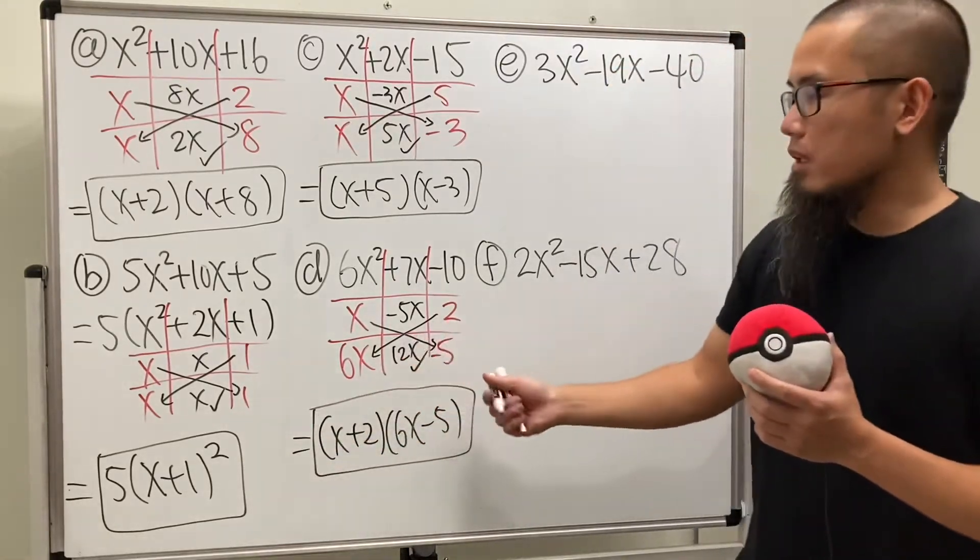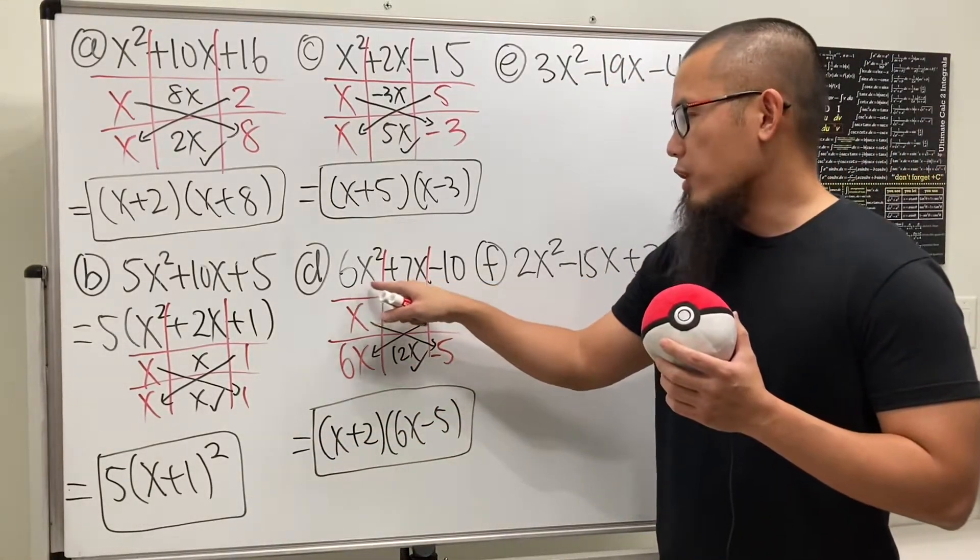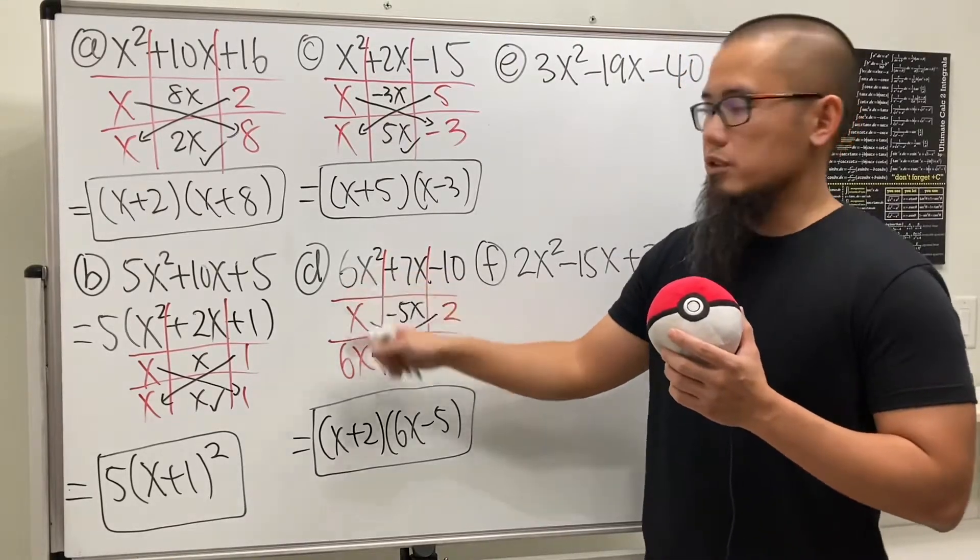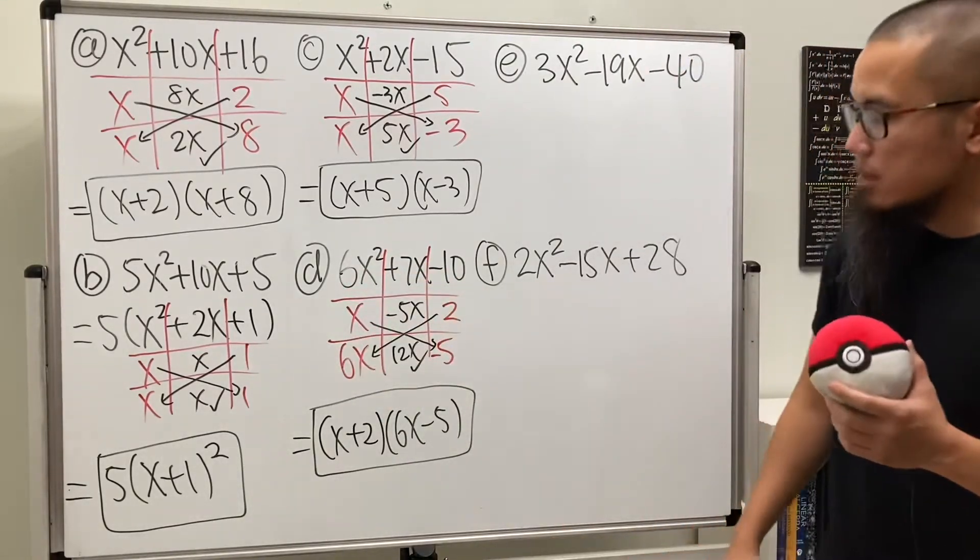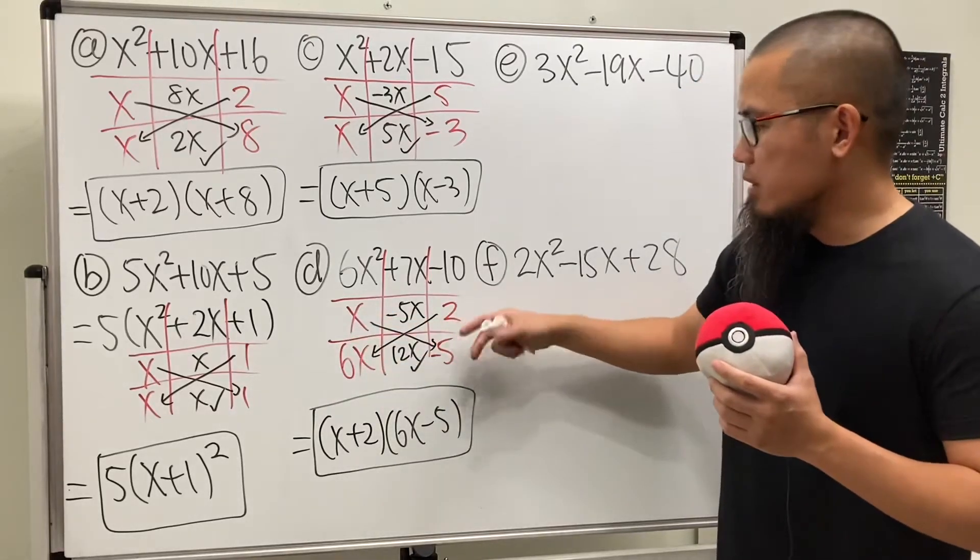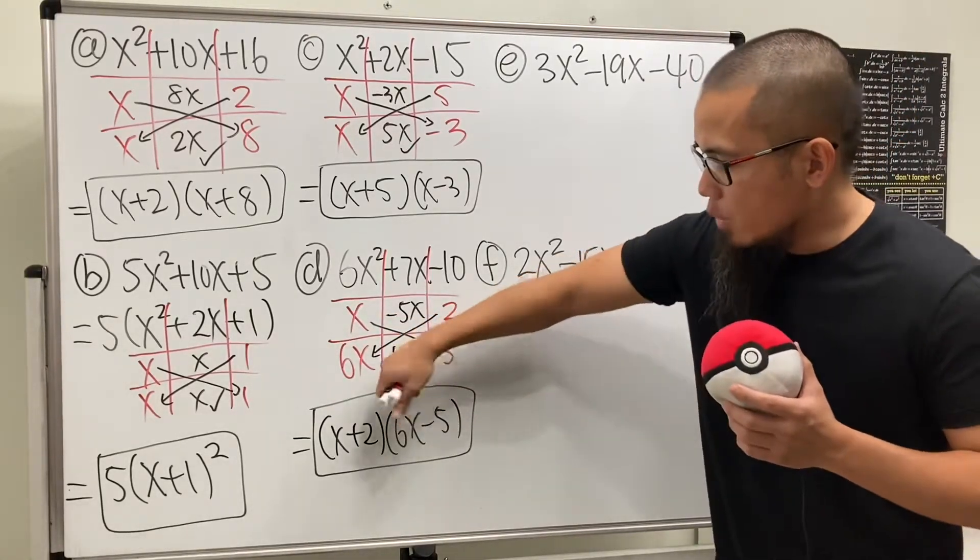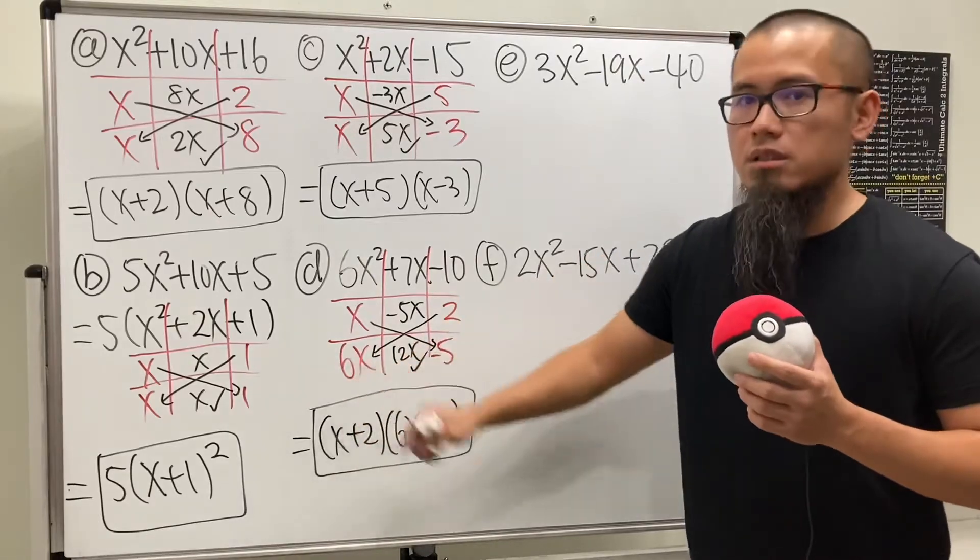So the answer for this is x plus 2 times 6x minus 5. And this right here becomes harder because we have a coefficient in front of the x squared that's not 1. So you will have a couple choices for that. So the order of this matter and the order of this also matter. But in the end, the order of how to write down the factors doesn't matter.